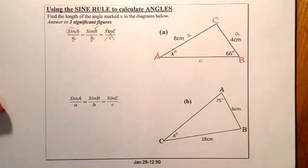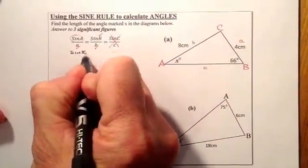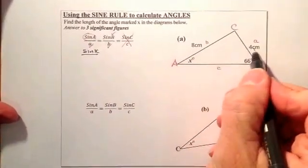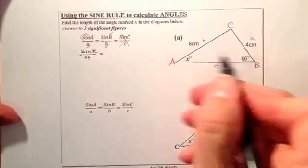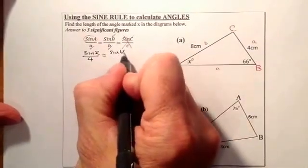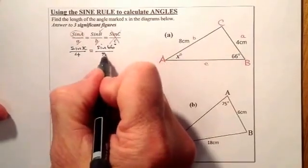Right, so let's go ahead and substitute our values in. I've got x there as an angle, so I'll go for sine x all over 4 for a is equal to sine 66 degrees, and that's all over 8.